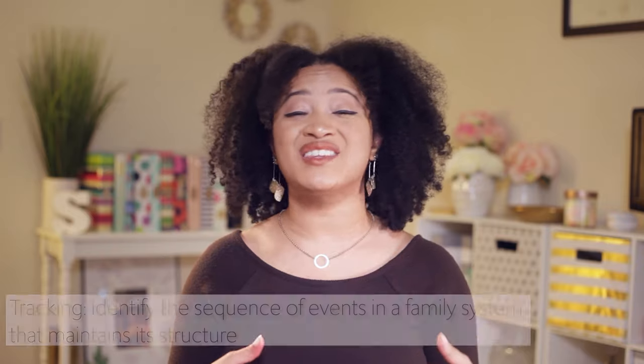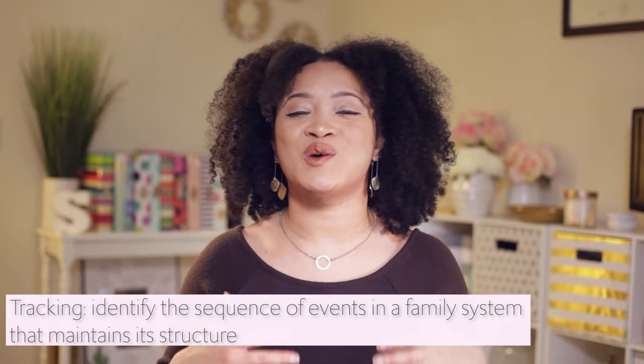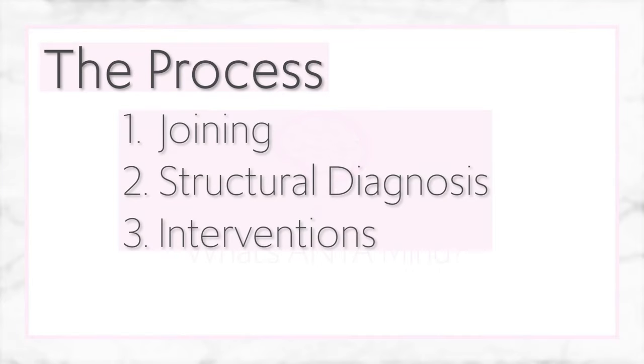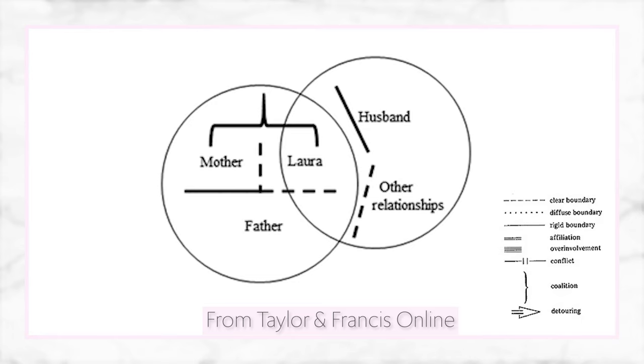Another joining technique is tracking, where you identify the values of the family — their long-term goals as a family and as individuals, significant life events, and milestones that are important to them. The next phase is evaluating the structure. Once the conversation is going and you've joined with the family, this is when you pay attention to any boundary issues. Structural family therapy also utilizes a family structural map — almost like a family tree, but depicting the rules between each person, subsystems, boundaries, coalitions, and even people who aren't in the room. For example, if a mom always goes to her own mother about marital issues, that person can be included on the diagram as well.